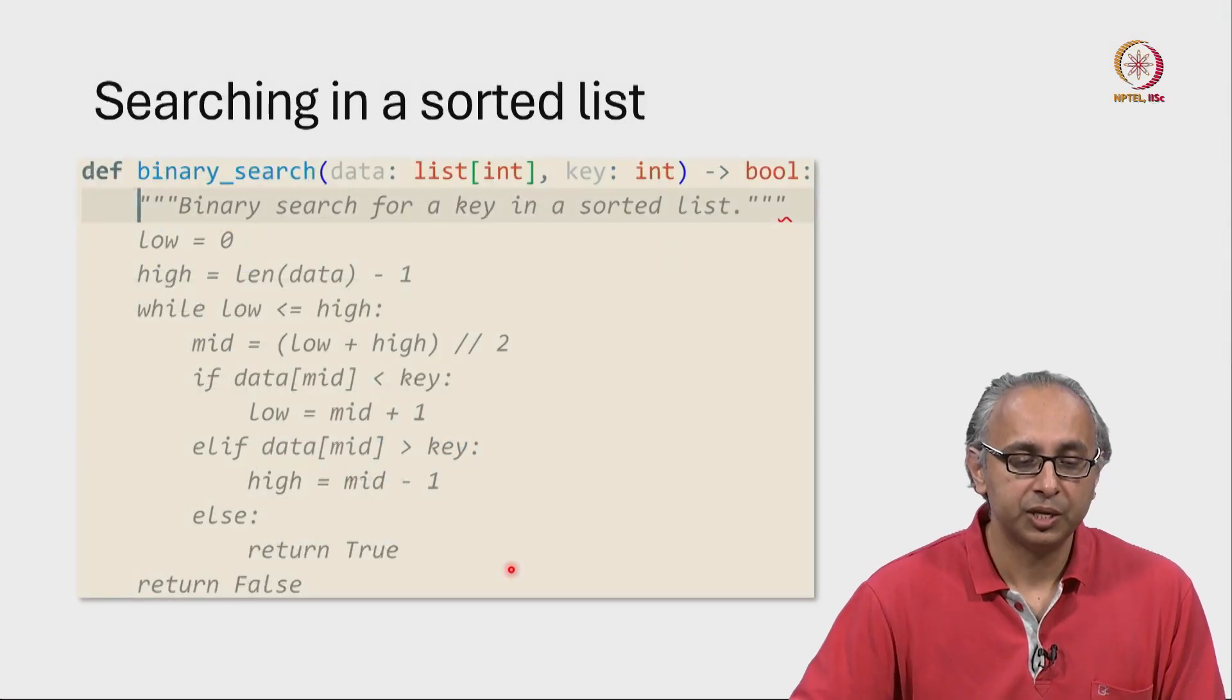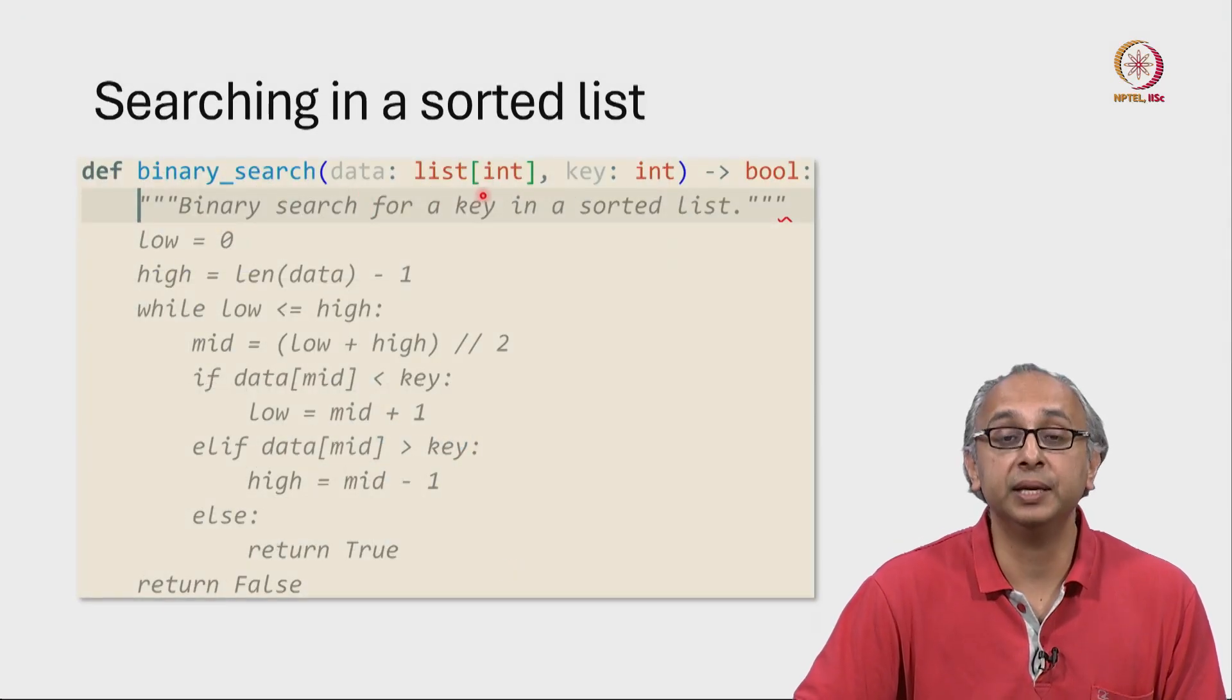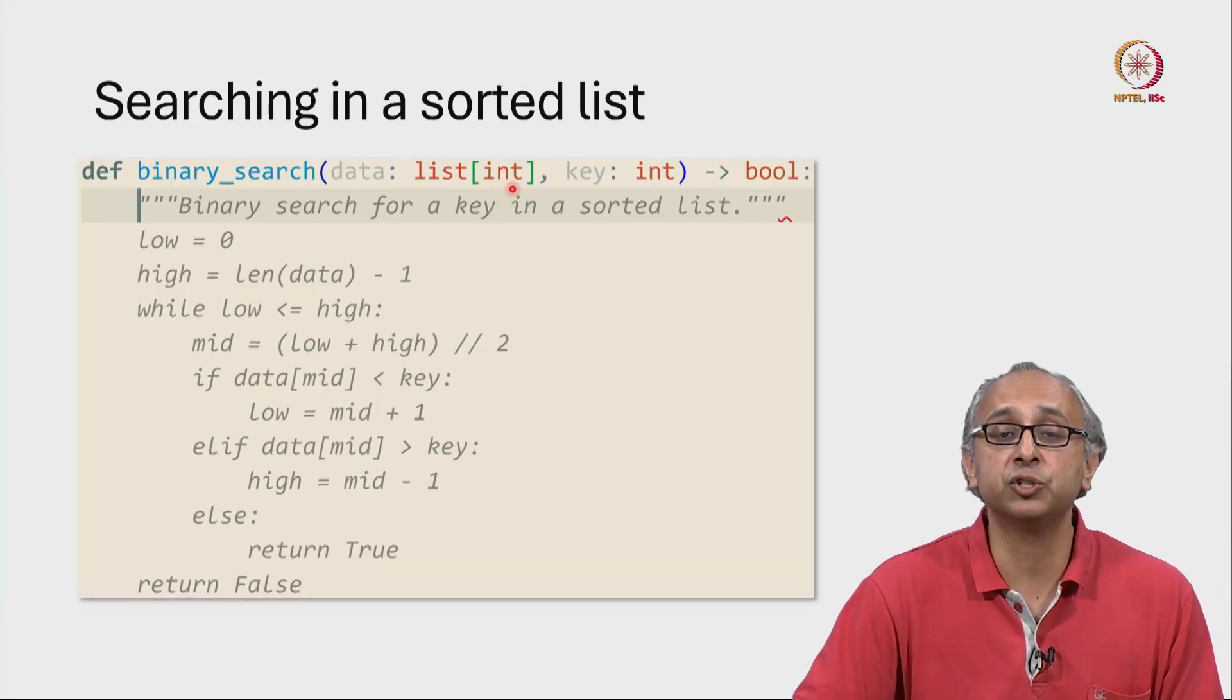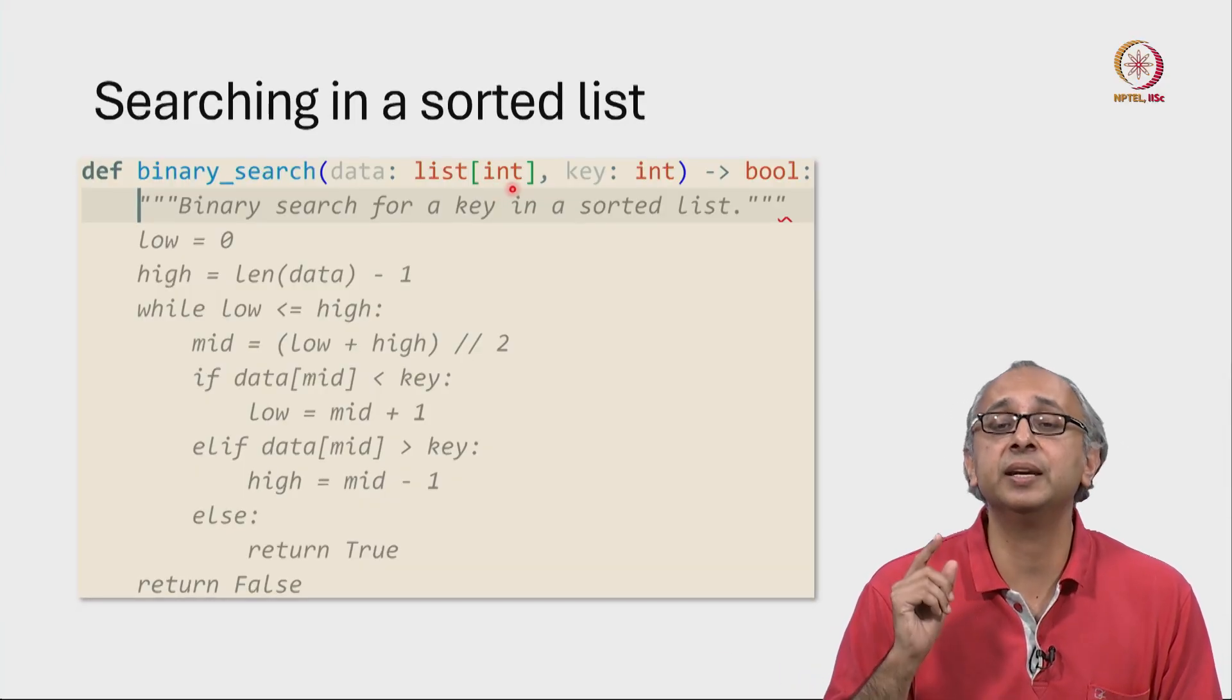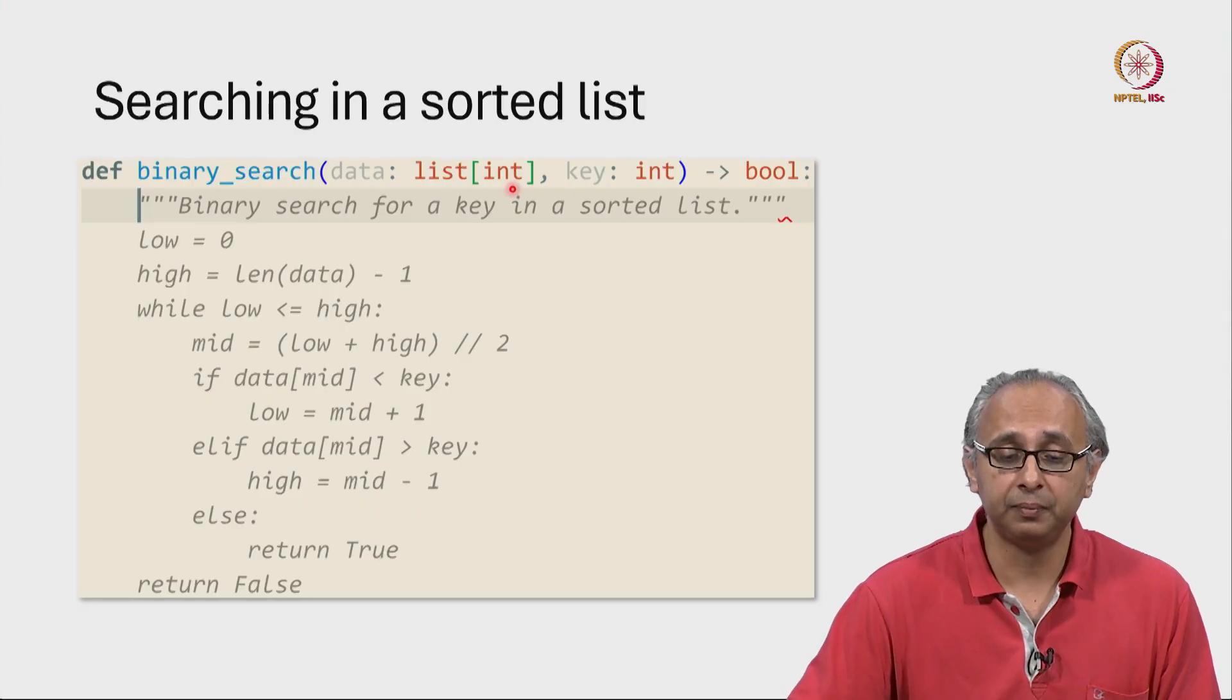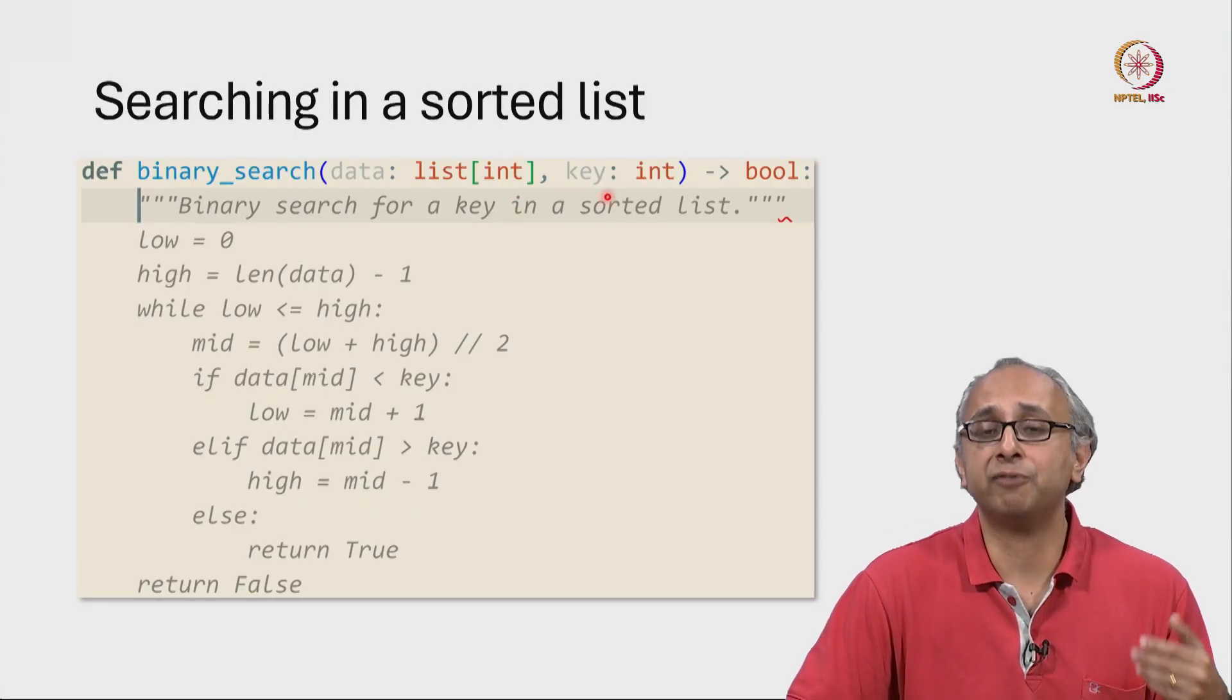Here is that code. I have some list, I'm assuming it's a list of integers and I'm assuming that list is sorted in ascending order. And I'm given some value to search for.